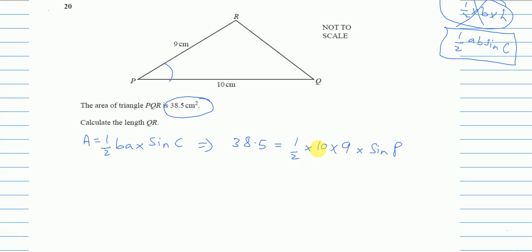So half of 10 is 5, 5 into 9 is 45. So 45 is being multiplied on the right hand side. On the left hand side it will be a divide.